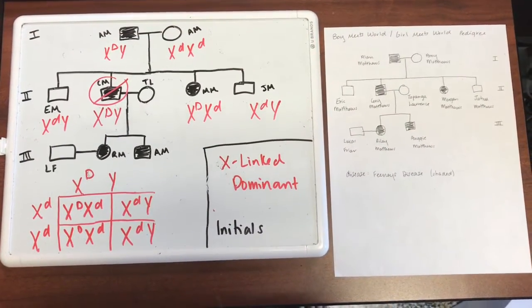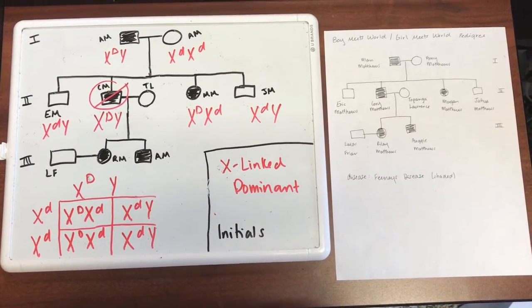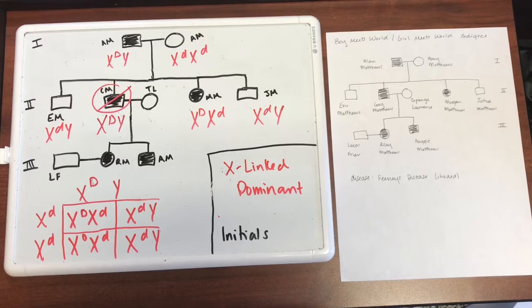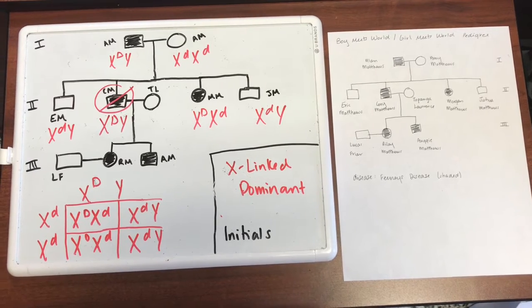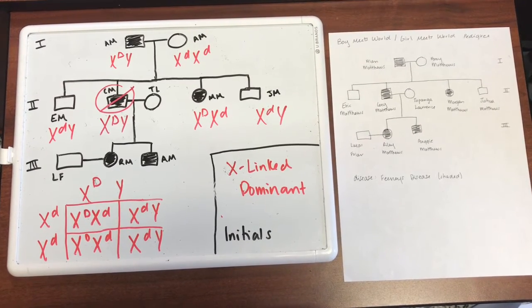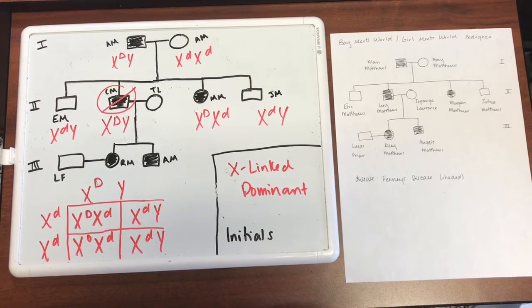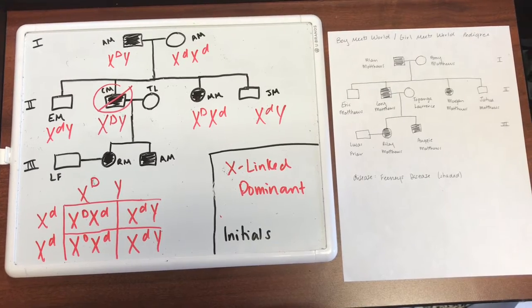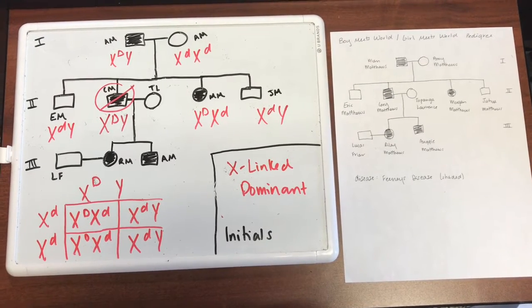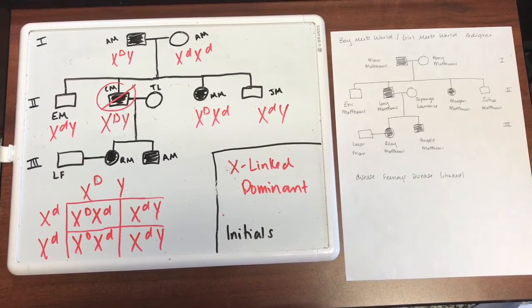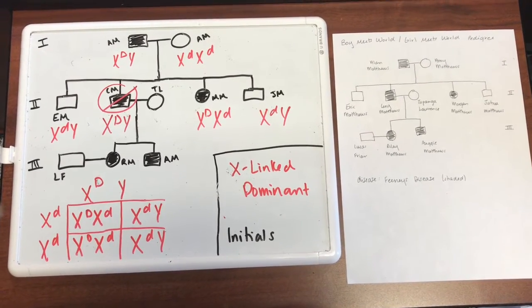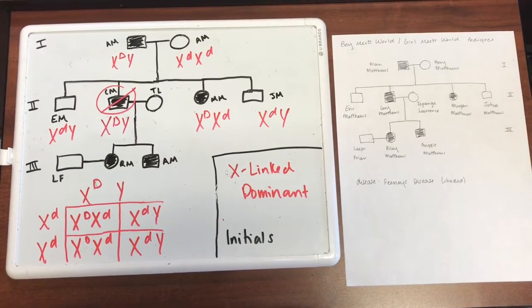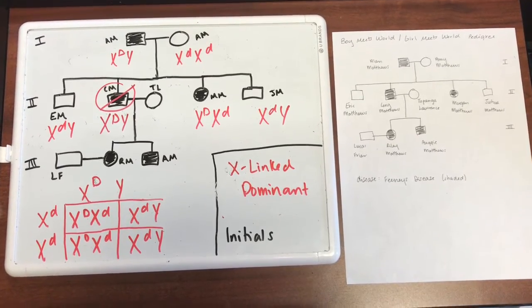Our pedigree cannot be X-linked dominant because of Cory. The father is affected and the mother is not affected, so whenever you do the Punnett square cross of them, all of their daughters will be affected, like Morgan, but all of their sons will be unaffected. However, Cory is affected.